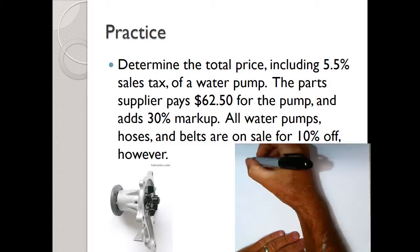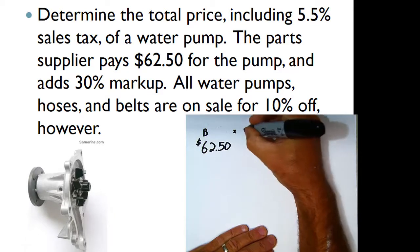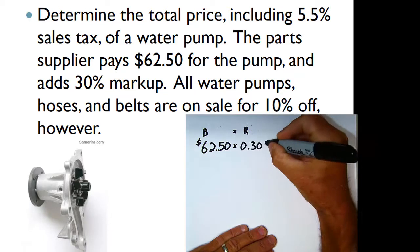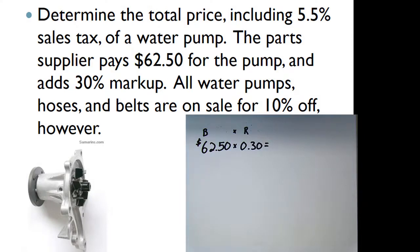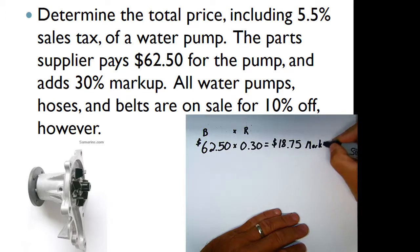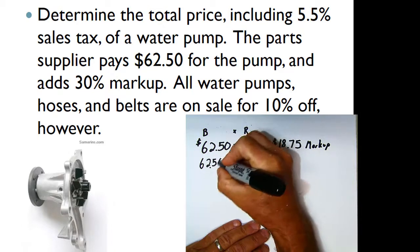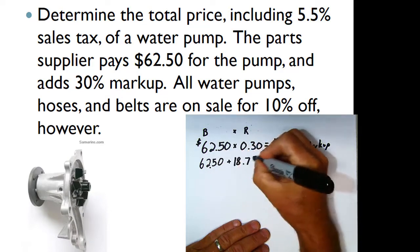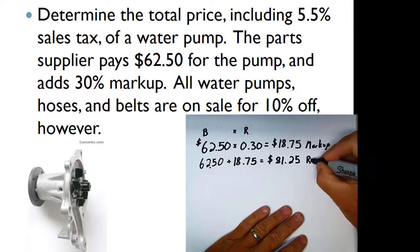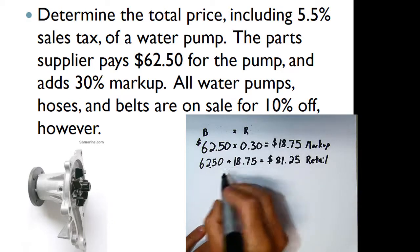Our base is $62.50. We multiply $62.50 by the markup rate of 30% (0.30), which gives us $18.75 in markup. Adding $62.50 + $18.75 gives us a retail price of $81.25. That retail price now becomes the base for the next step.